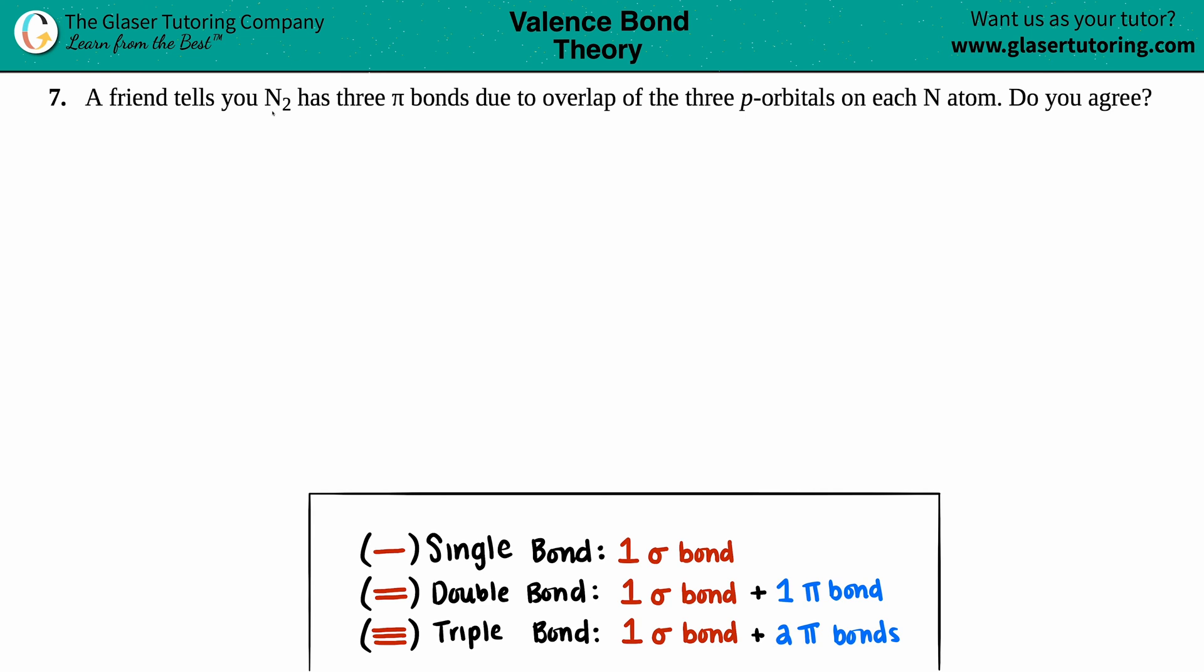Number seven: A friend tells you N₂ has three pi bonds due to the overlap of the three p orbitals on each N atom. Do you agree? Well, in order to answer this question, the easiest way is to just see what N₂ looks like in a Lewis structure.